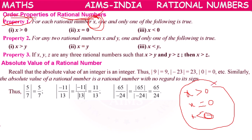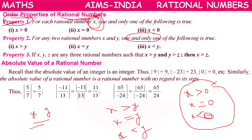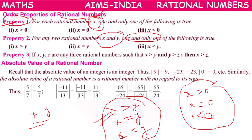If we have two rational numbers x and y, then also only one and only one condition is possible: either x is greater than y, or x is equal to y, or x is less than y. Out of these three conditions, only one is applicable when there are two rational numbers. That is Property 2.